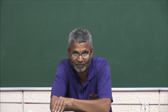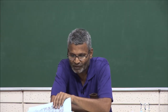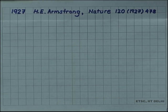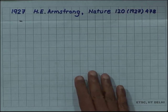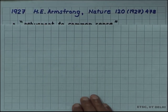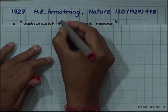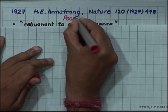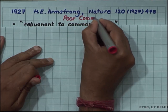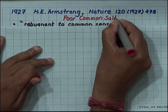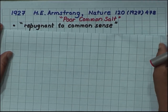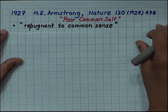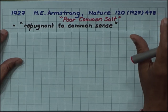One of the famous chemists who held this view was H. E. Armstrong. In the same year 1927, when Bragg made his comment, Armstrong wrote in the same journal Nature an article — or rather a letter — titled 'Poor Common Salt.' He essentially criticized and severely attacked Bragg's idea with statements like 'repugnant to common sense.'